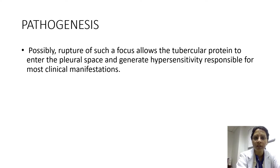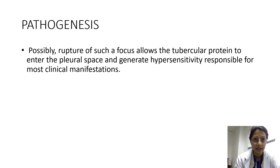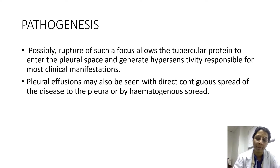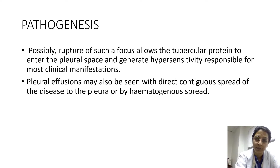The most common pathogenesis of a pleural effusion is rupture of a focus which allows the tubercular protein to enter the pleural space and generate a hypersensitivity reaction. These are most commonly Type 4 hypersensitivity reactions, or cell-mediated hypersensitivity reactions. In some cases, pleural effusion may also occur as a direct contiguous spread of the disease to the pleura or by hematogenous spread.